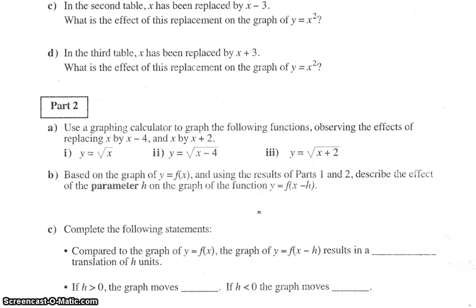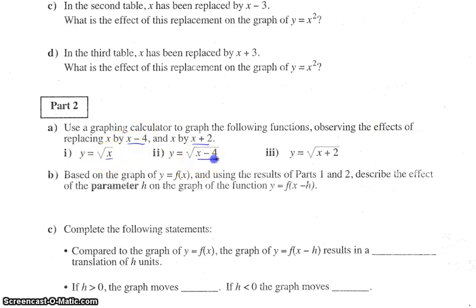Welcome everybody back to our lesson one for transformations. We're continuing along with part two here. We're looking at horizontal translations. We're going to use the graphing calculator to graph the following functions and see if we're confirming what we suspect. What happens if we replace x with x minus four or say x plus two? I'm thinking it's going to move it left or right, and it's probably going to be opposite of what we think. But let's test it out.